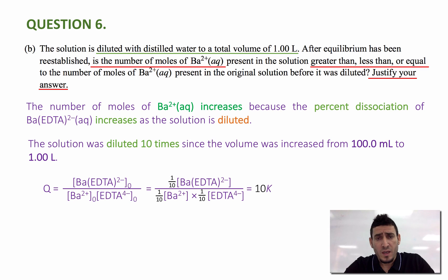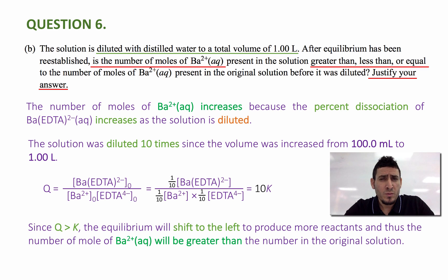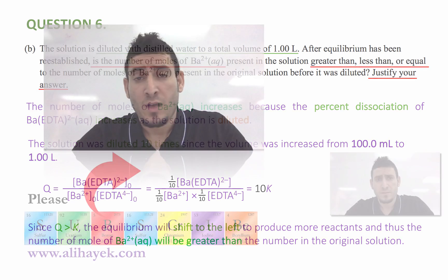Therefore, if Q is greater than K, the equilibrium will shift to the left, to the reactant side, to form more reactants. Since Ba 2+ is a reactant, the number of mole of Ba 2+ will increase. So the answer will be, the number of mole of Ba 2+ will be greater than the number in the original solution.